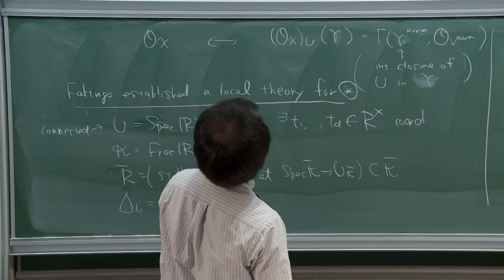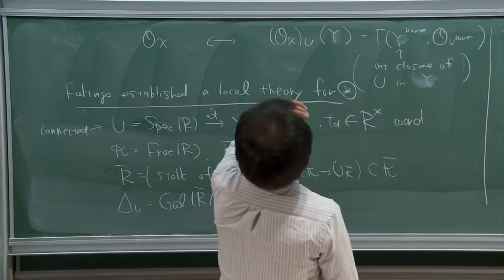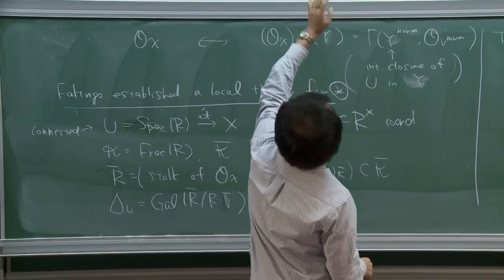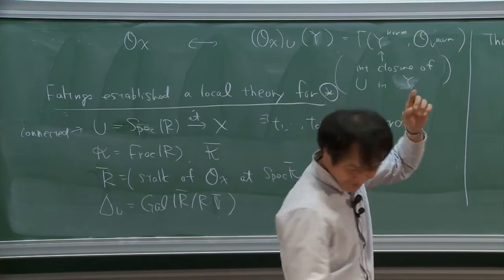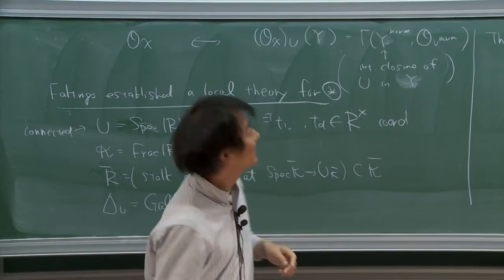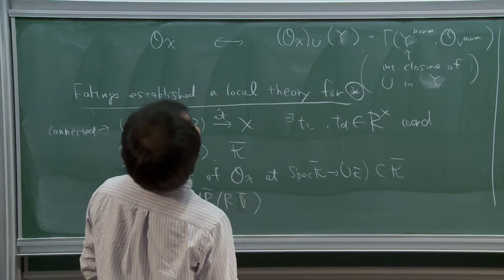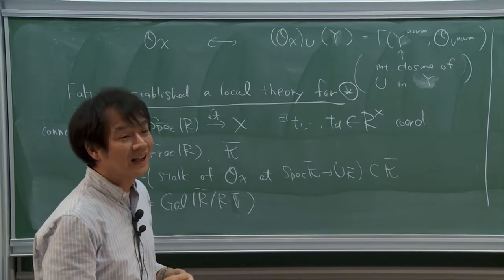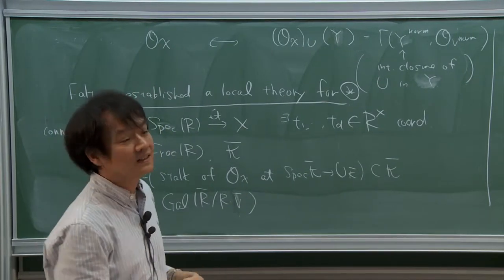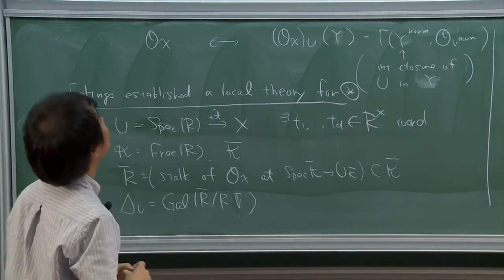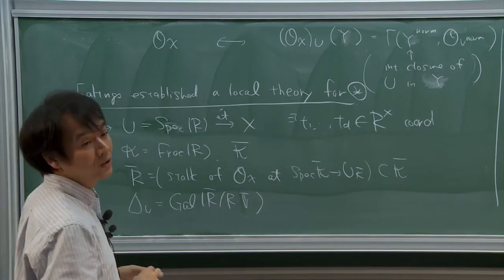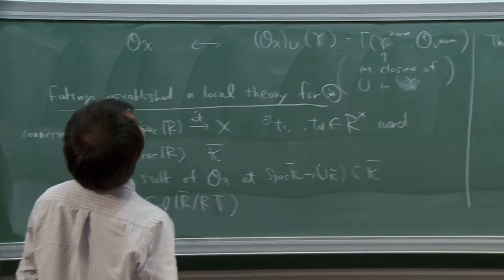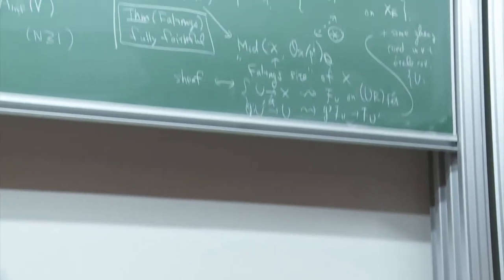I made a mistake: I have to start from X over V, with V-bar added. So X is smooth over V — good reduction — and we also fix a model.